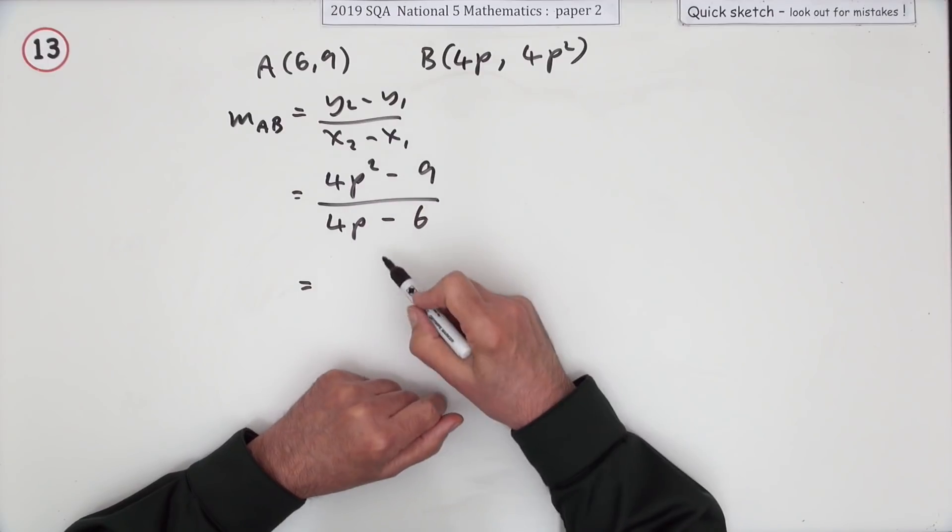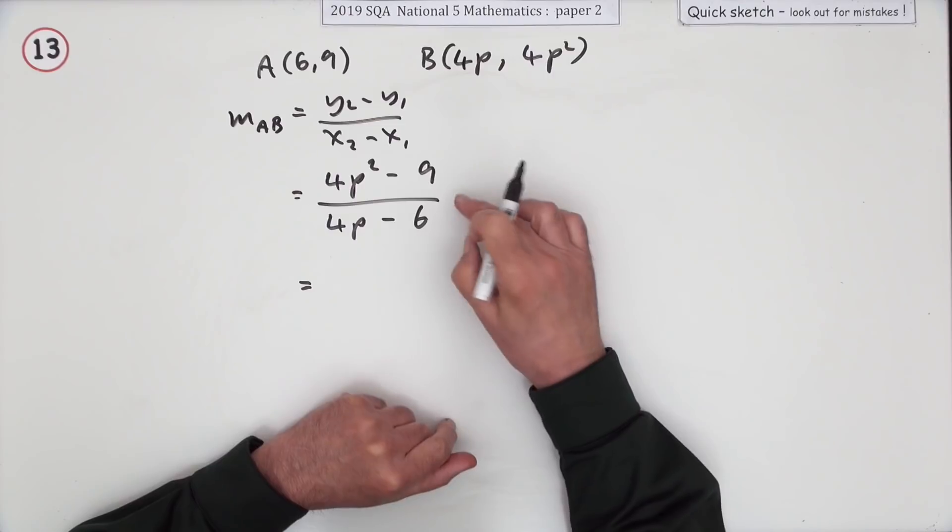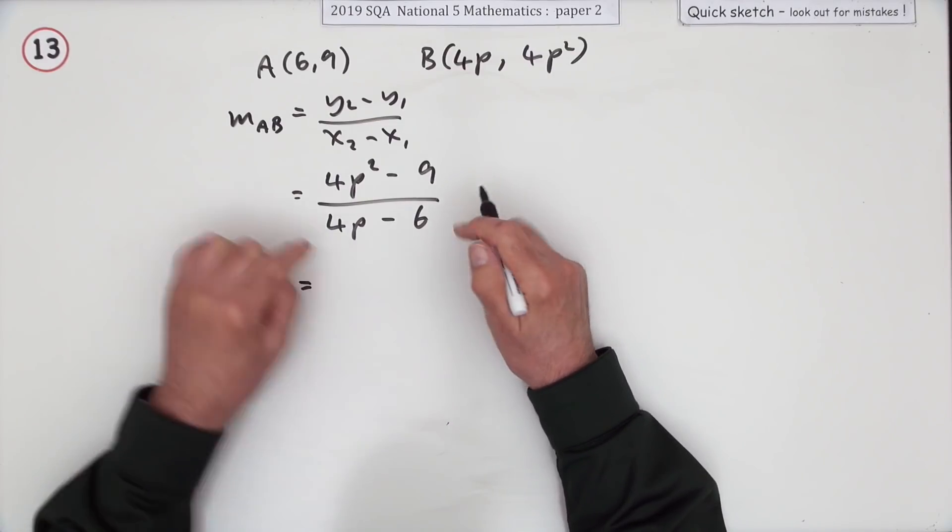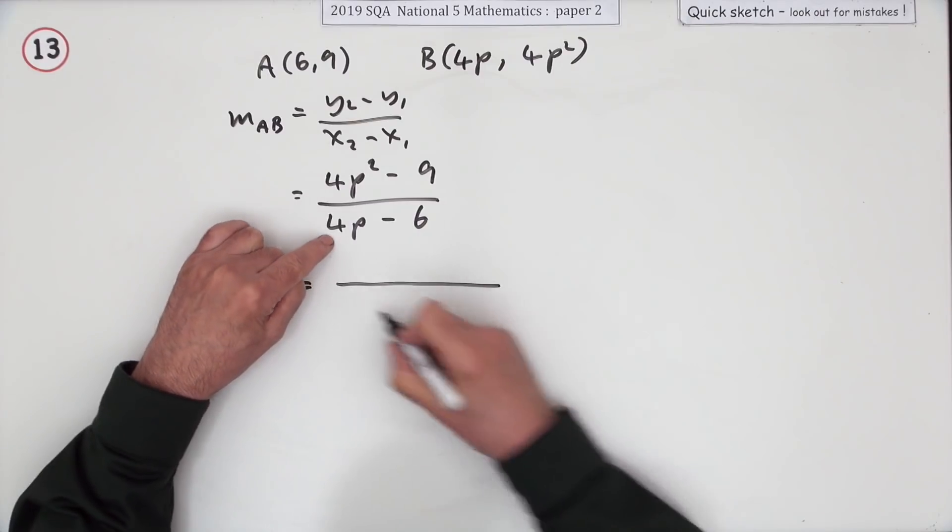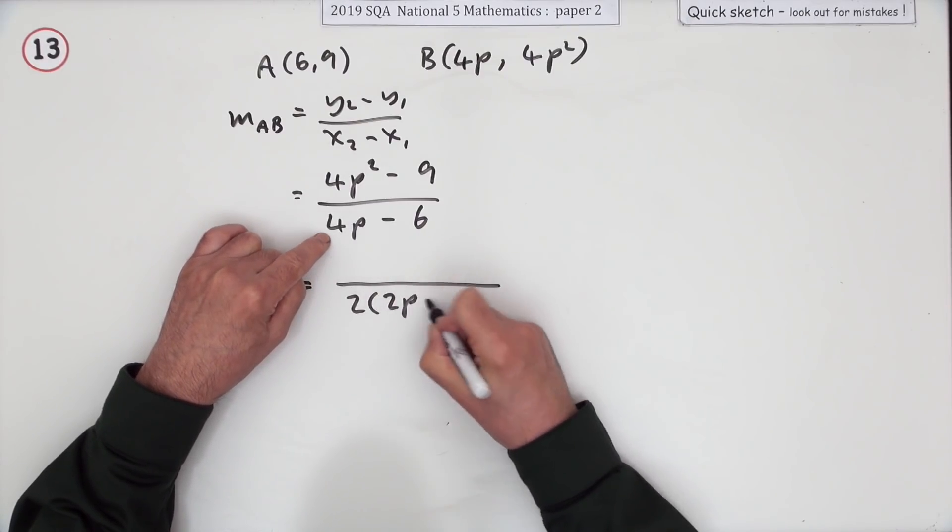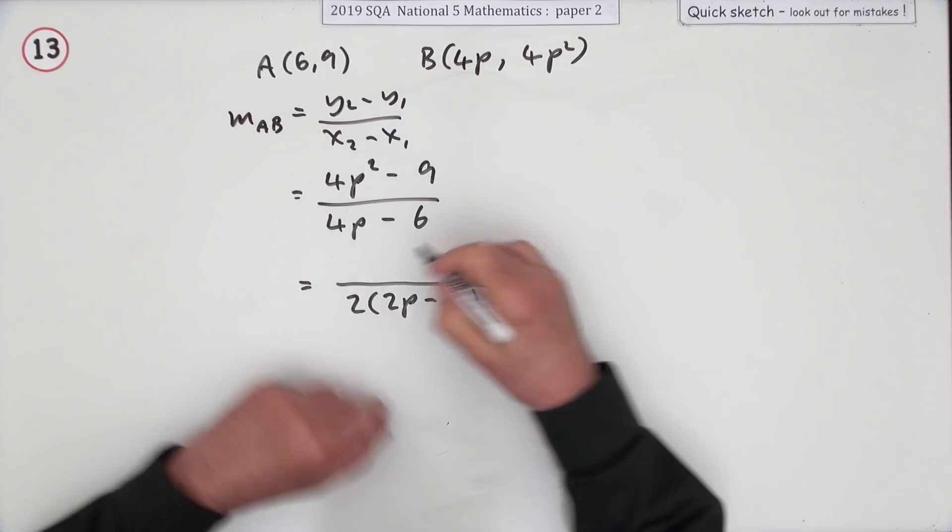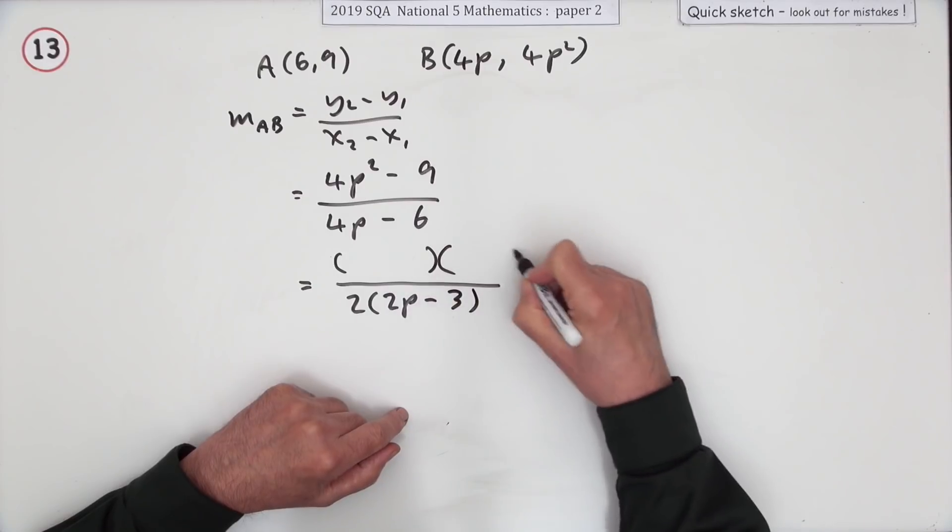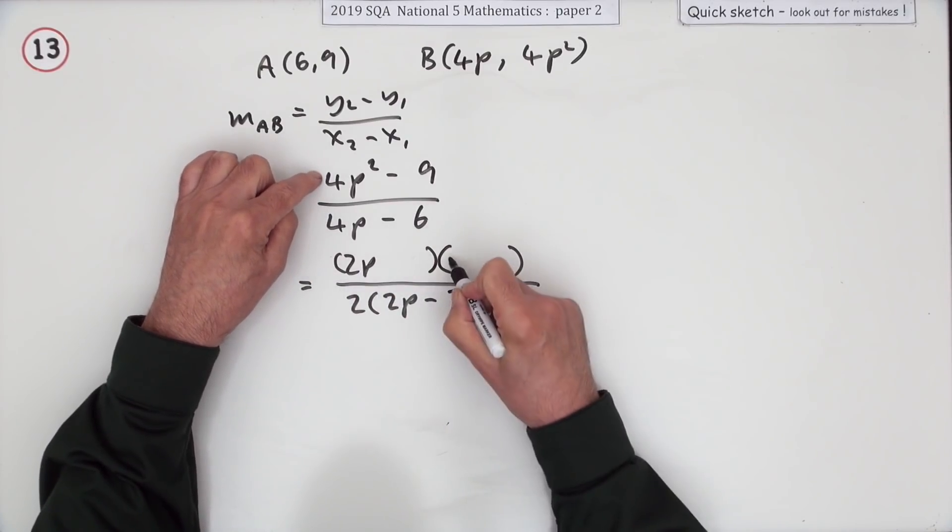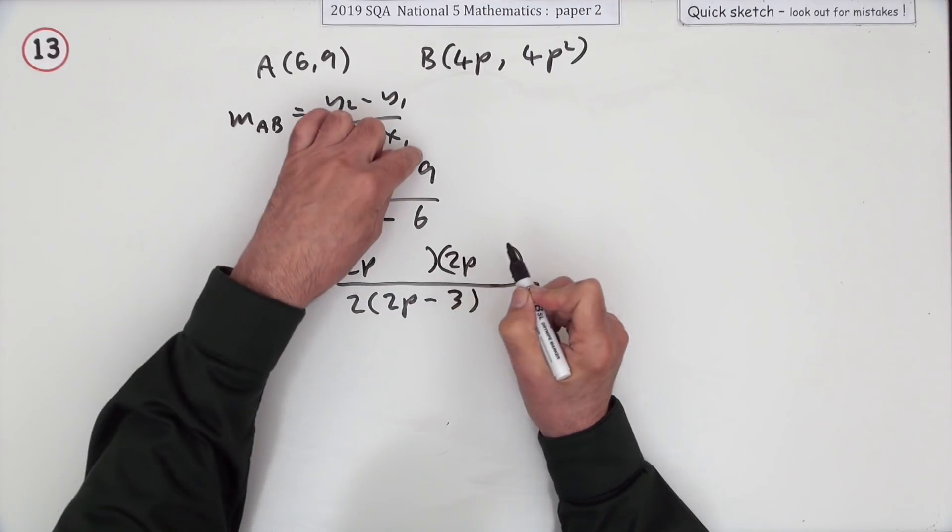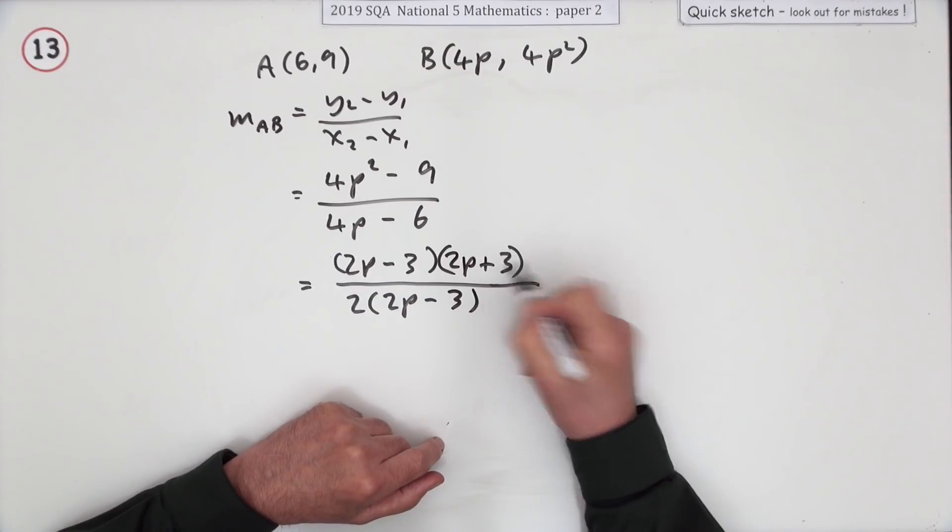Now it says in its simplest form. Don't try to cancel out p's - you can't cancel out sums, you can only cancel out factors. This needs factorizing. Maybe easier to spot the factor in the denominator because there's a 2 there: that's 2 times (2p - 3). The top is the difference of two squares - that's (2p)² and that's 3² - so it'll be (2p - 3) times (2p + 3).